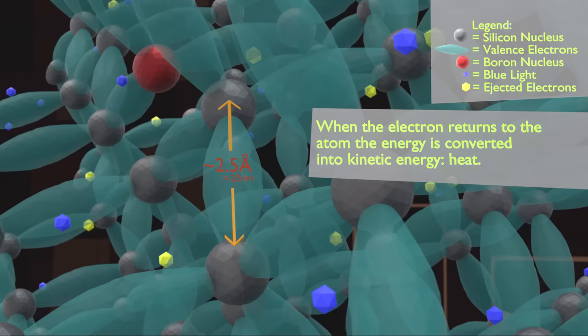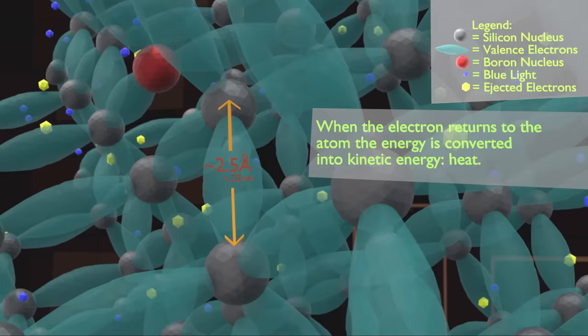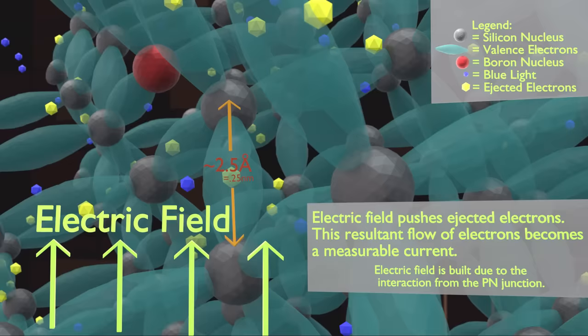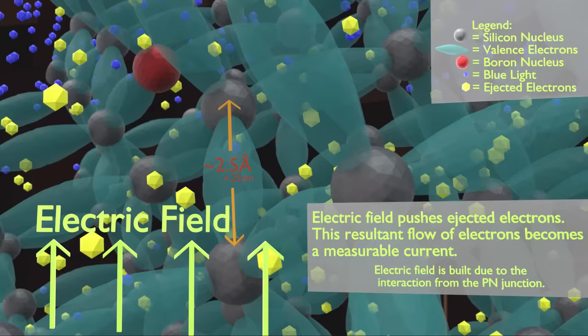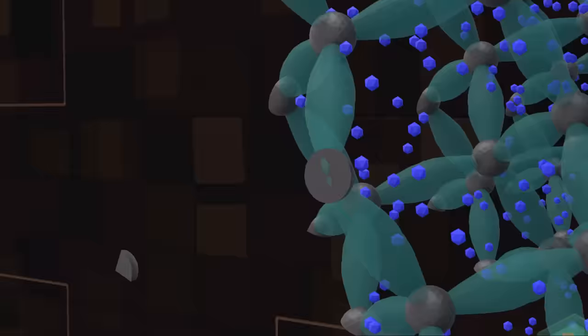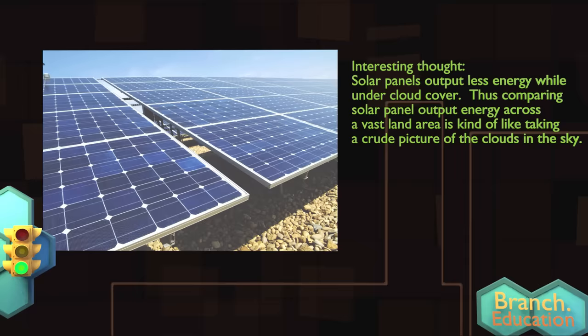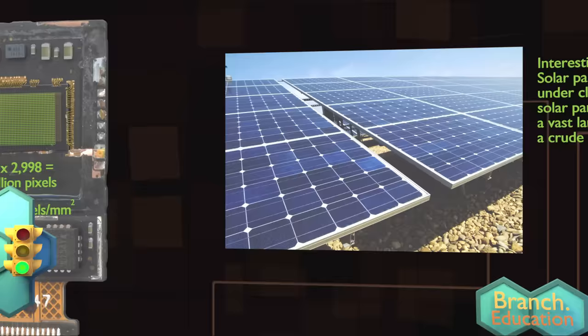Usually, the electron would just recombine with the atom, and the extra energy would be converted back into light. However here, due to an electromagnetic field, the ejected electron is pushed away, so that it can't recombine with the atom. When a lot of photons eject electrons, a current of electrons builds up, and this current can be measured. Massive grids of solar cell panels don't measure the buildup of electric current, but rather use the current to do work.